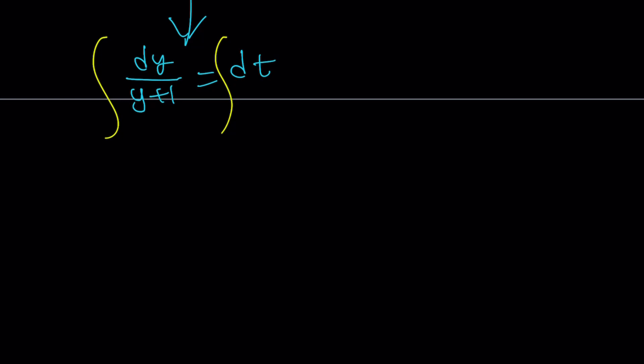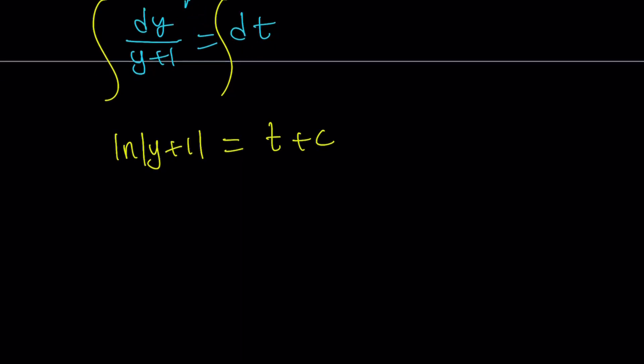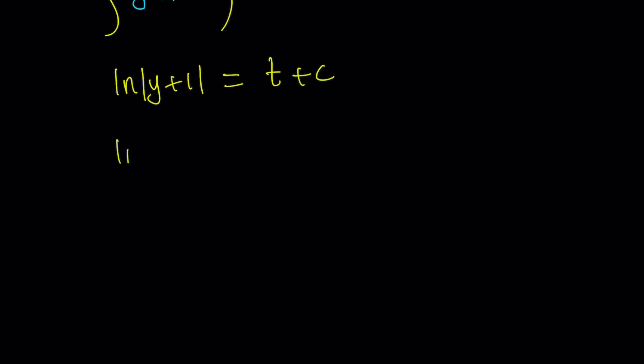When you integrate y plus one, you get ln y plus one. You know that there are two cases here. We're supposed to write the absolute value of y plus one. But if we assume that y plus one is positive, we can just safely write this as ln y plus one. The other case is fairly straightforward. So I'm just going to assume that y is greater than negative one. Therefore, ln y plus one is always positive. And then from here, we can basically solve for y, right?